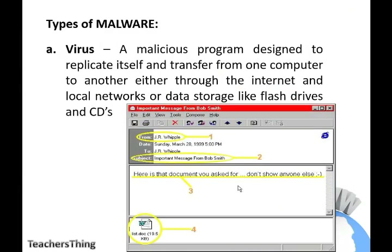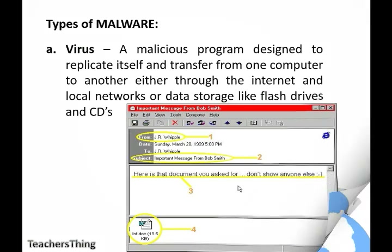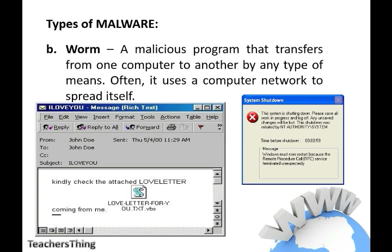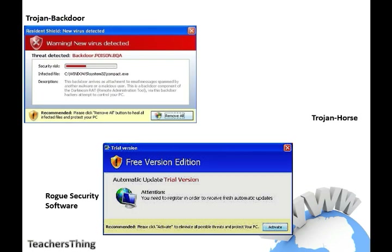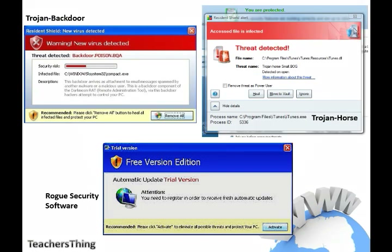Virus: a malicious program designed to replicate itself and transfer from one computer to another, either through the Internet and local networks or data storage like flash drives and CDs. Worm: a malicious program that transfers from one computer to another by any type of means — often it uses a computer network to spread itself. Trojan: a malicious program that is disguised as a useful program, but once downloaded or installed, leaves your PC unprotected and allows hackers to get your information. An example of Trojan malware is rogue security software — it tricks users by posing as security software and asks the user to pay to improve security, but in reality they are not protected at all.